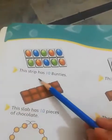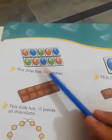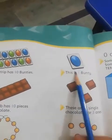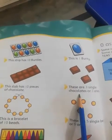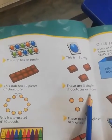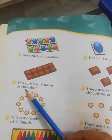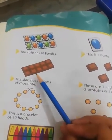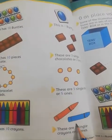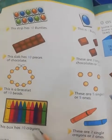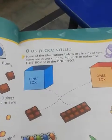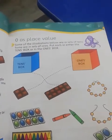On the next page, they show you that this strip has ten bunties; this is one bunty. These are three single chocolates — three ones. This slab has ten pieces of chocolate. These are five ones, these are two ones, and these are ten crayons.